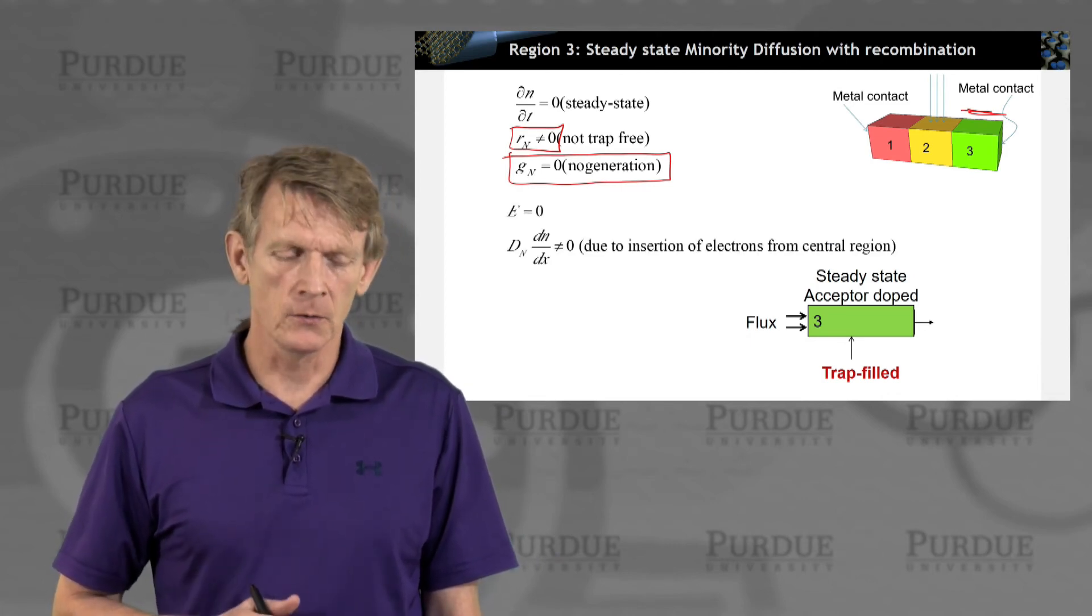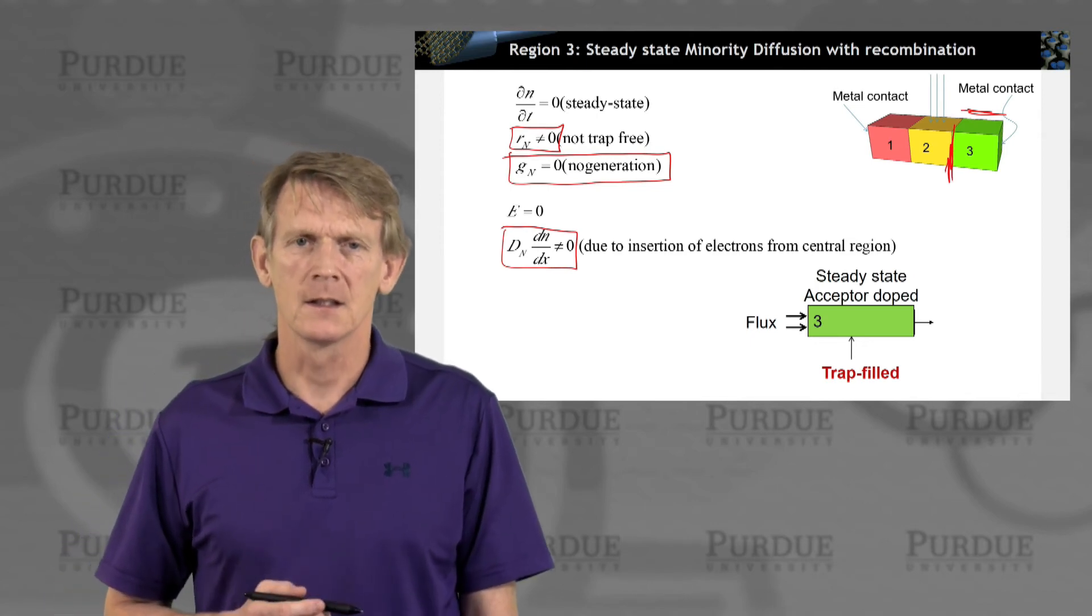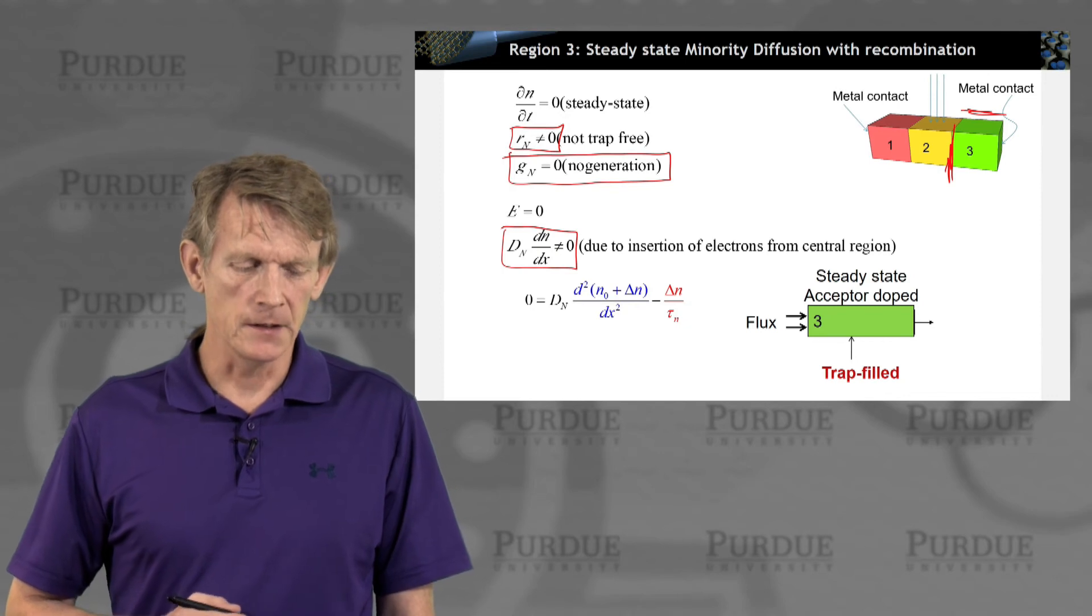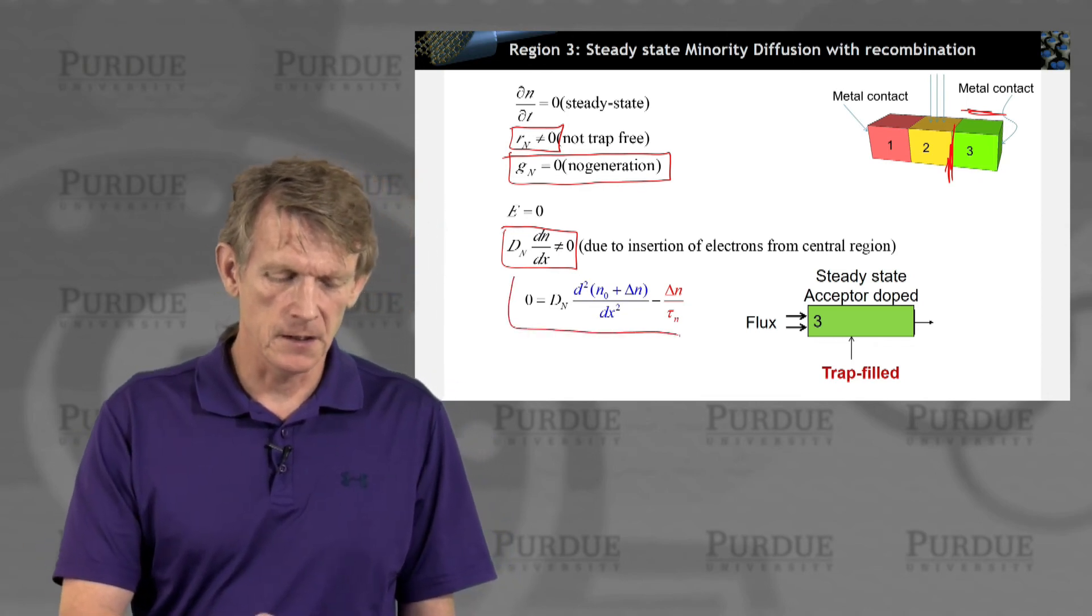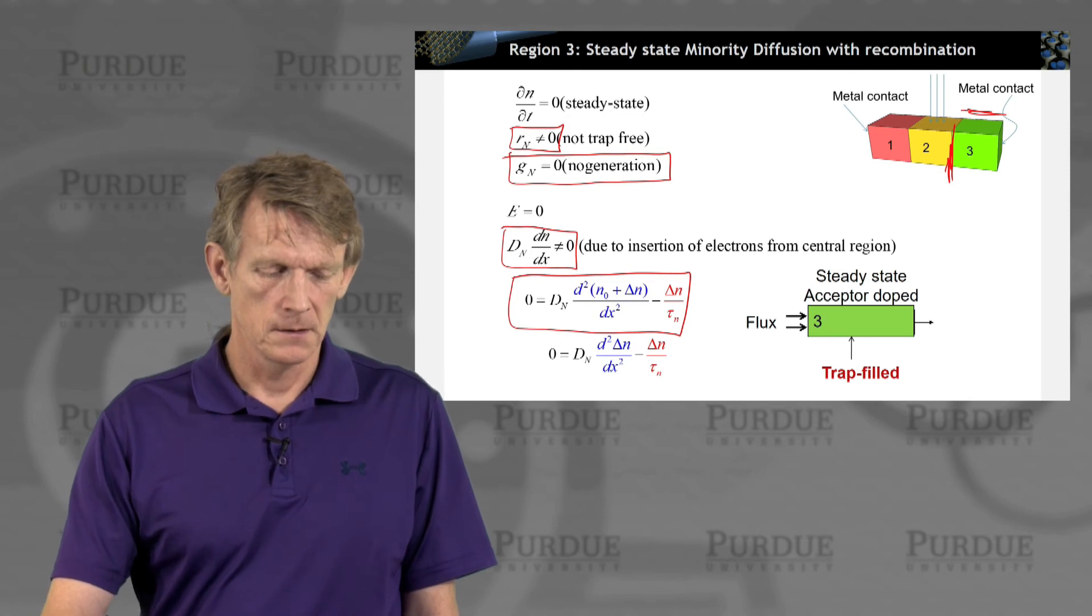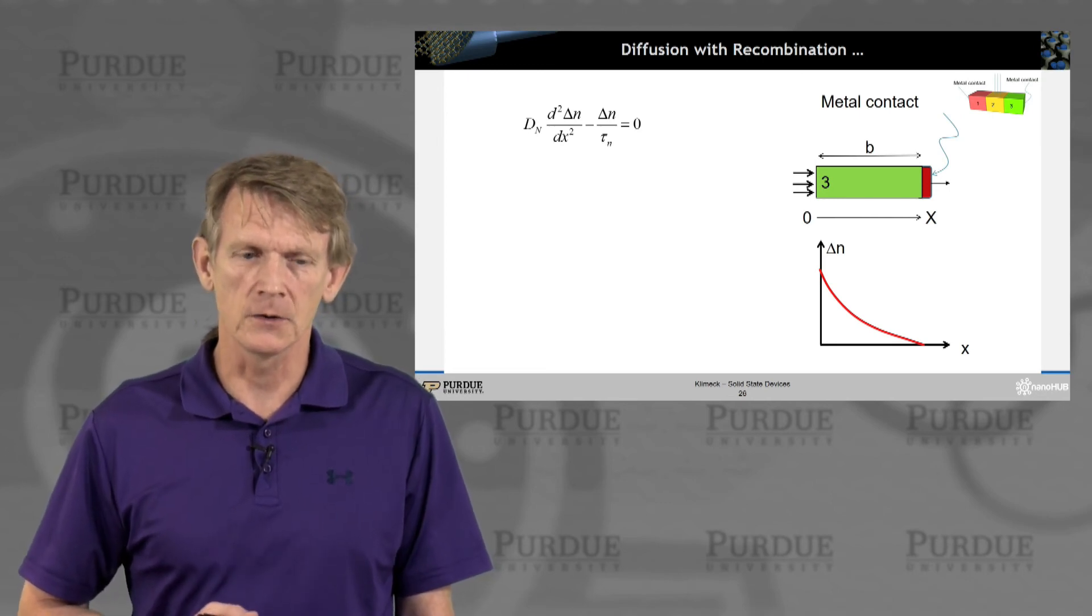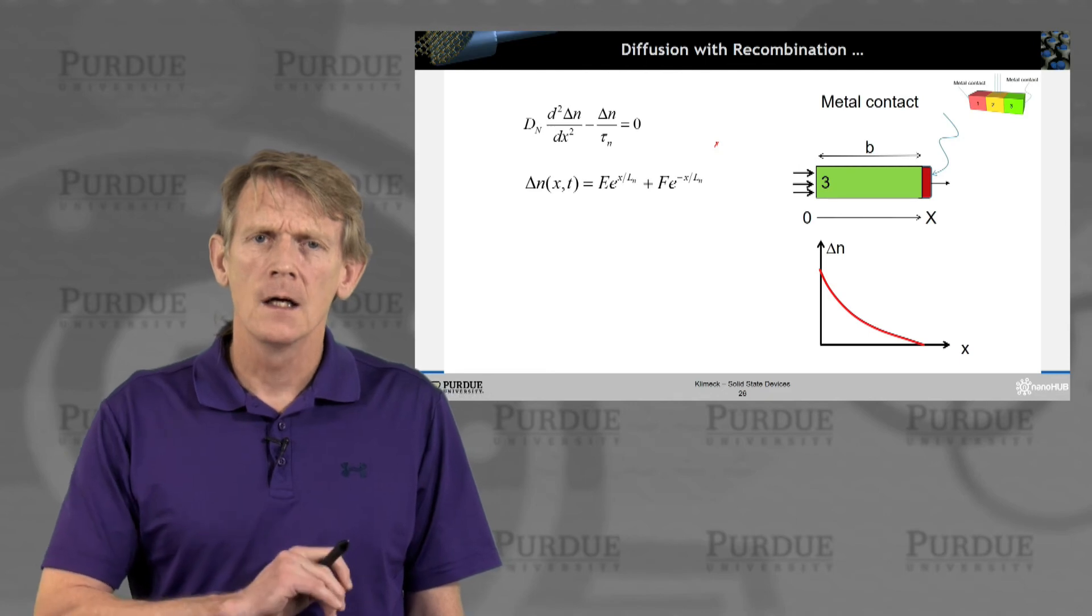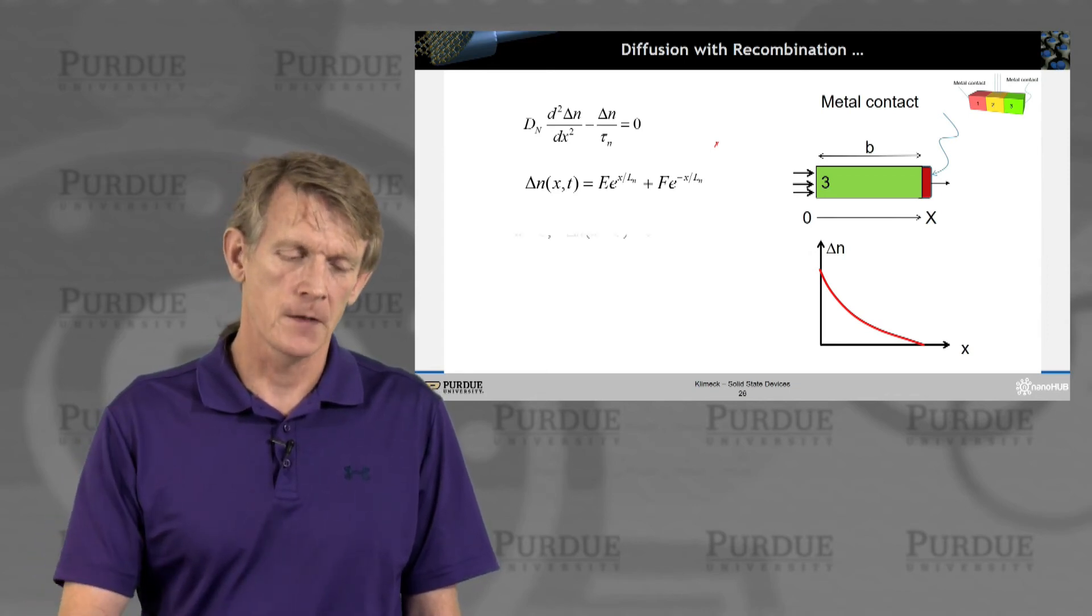All right. Again, the electric field inside the device is zero, but there's a diffusion component due to injection at this interface. So let's figure out what the electron density as a function of space would look like in this region number three. Again, we have the expression for the electron density here. We can solve this differential expression very simply. And solve the second-order differential expression, which is, of course, an exponential function that is increasing or decreasing. This is similar to how we solved Schrödinger's equation. And we have solutions that are both exponentially decreasing and increasing, similar to what we've done with tunneling in the Schrödinger equation.